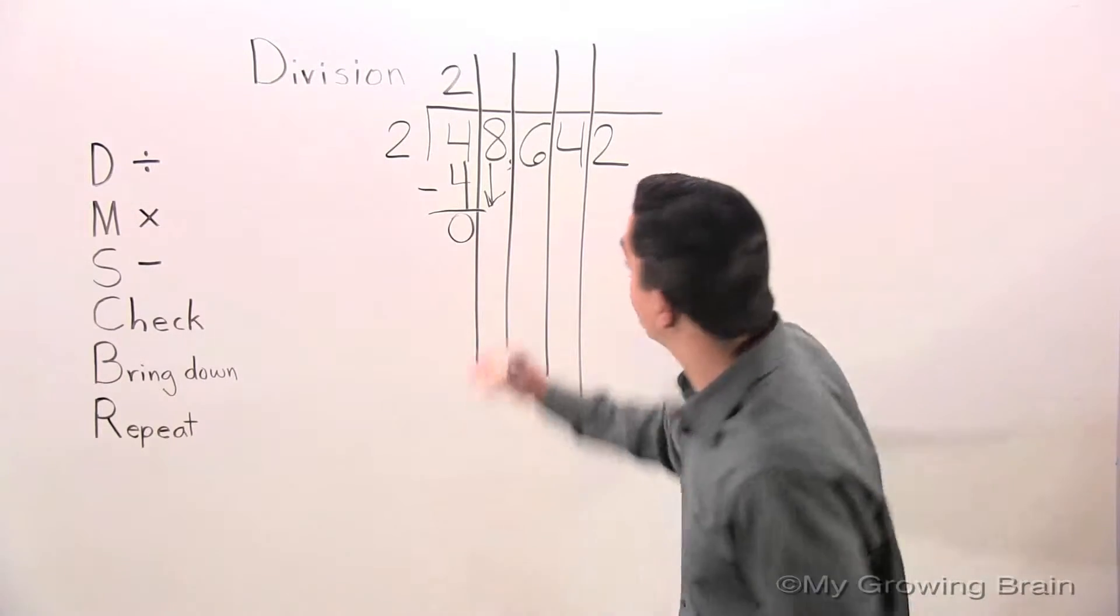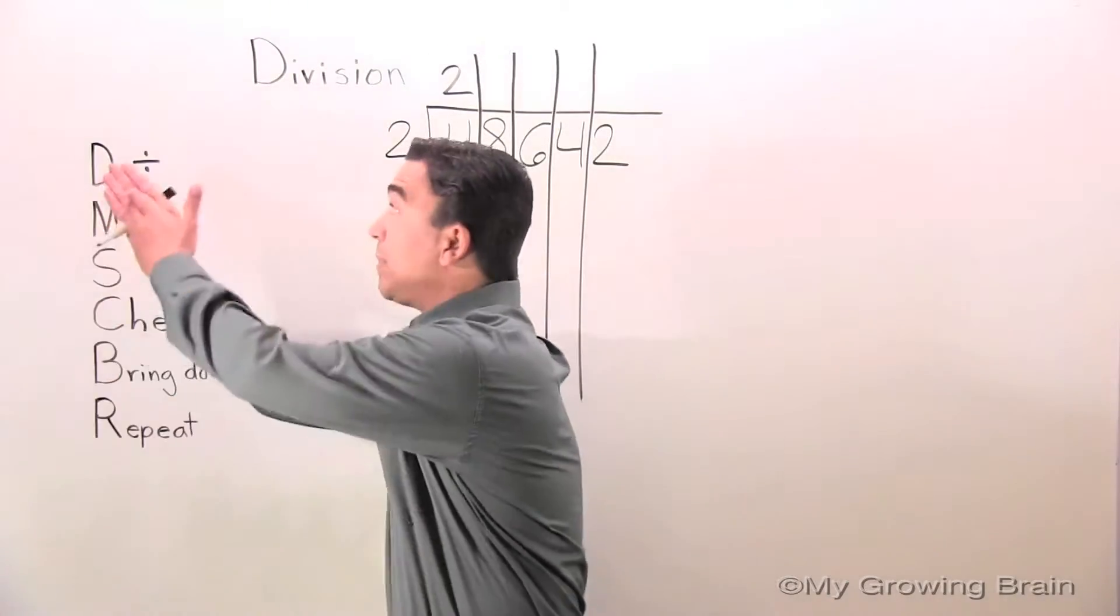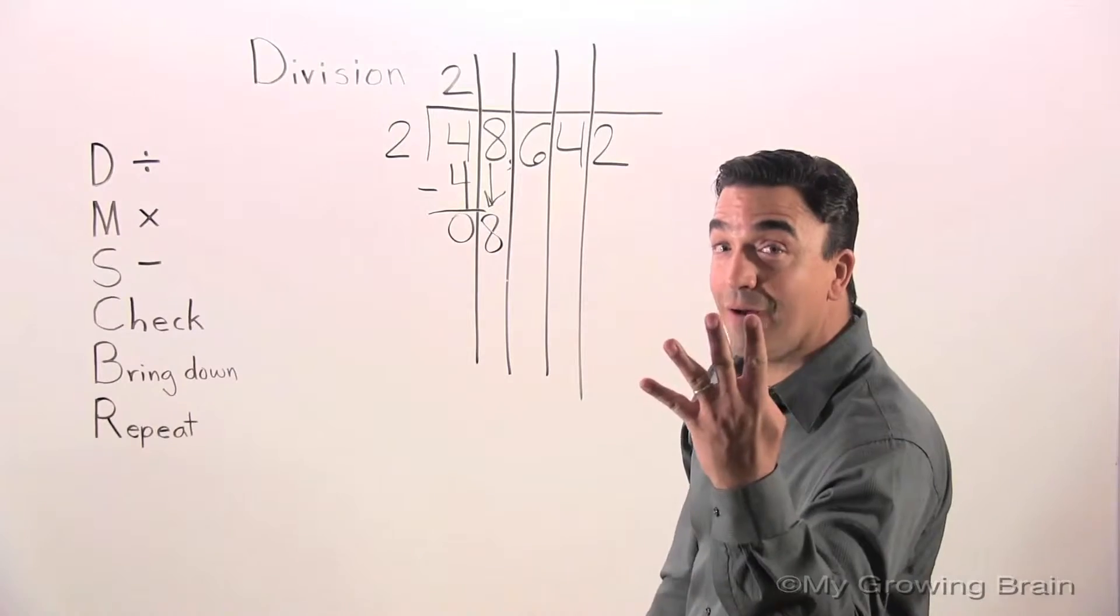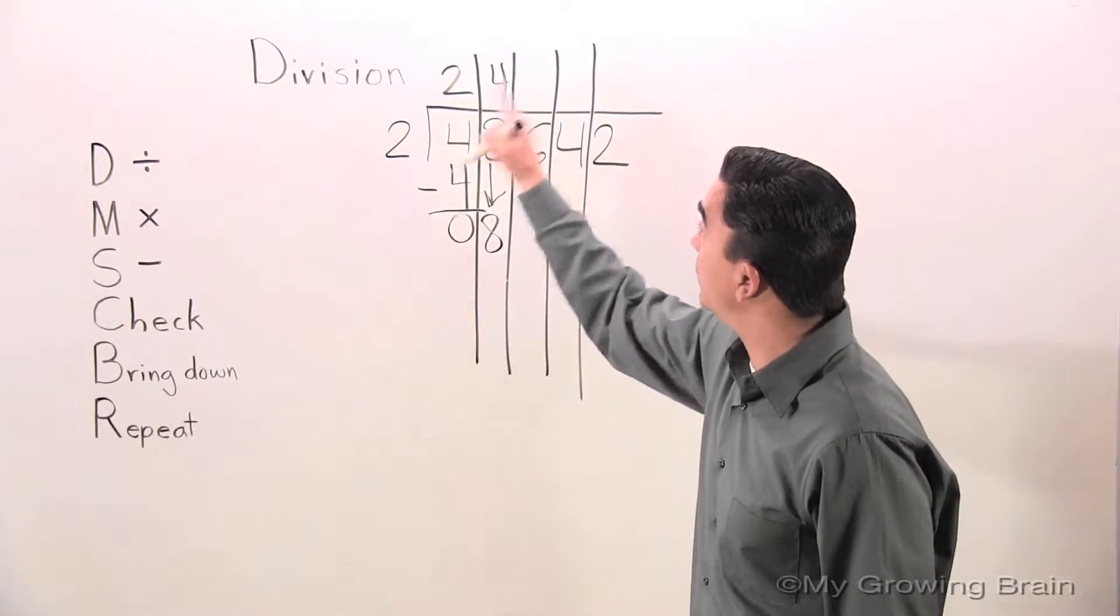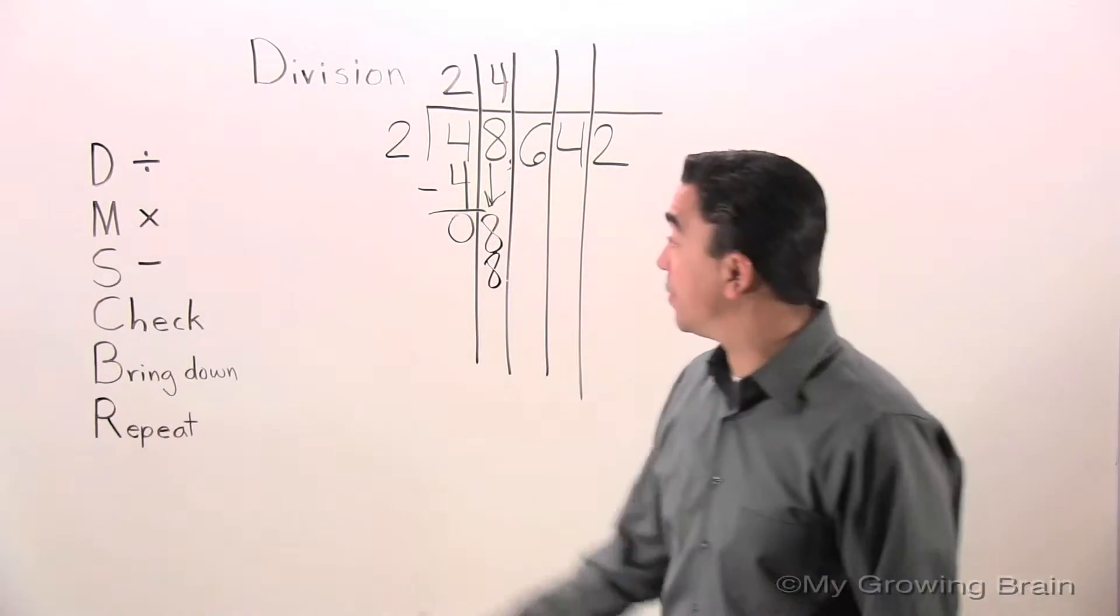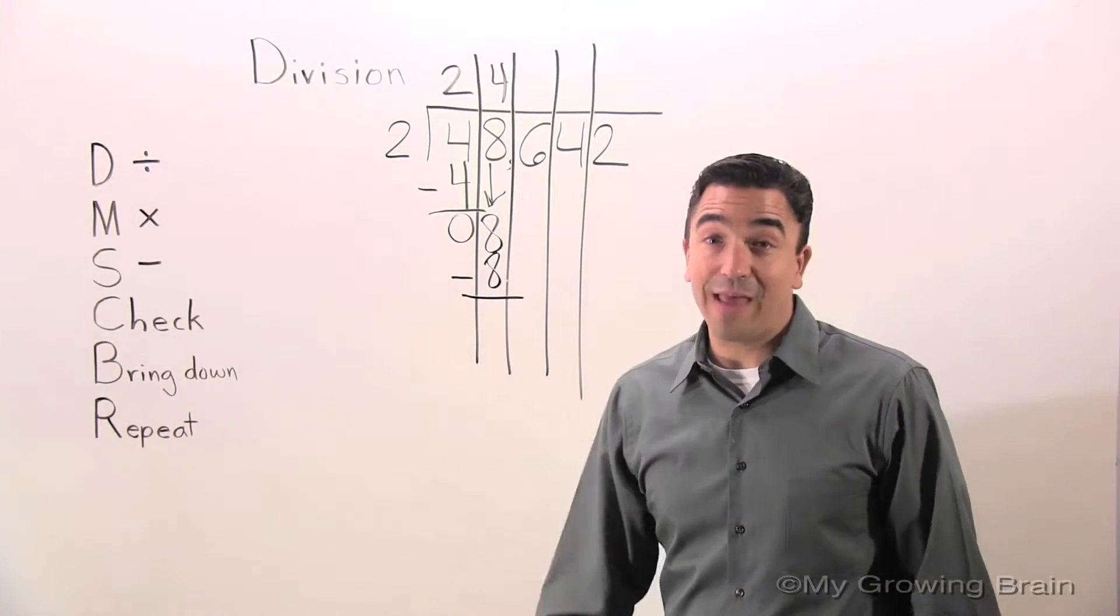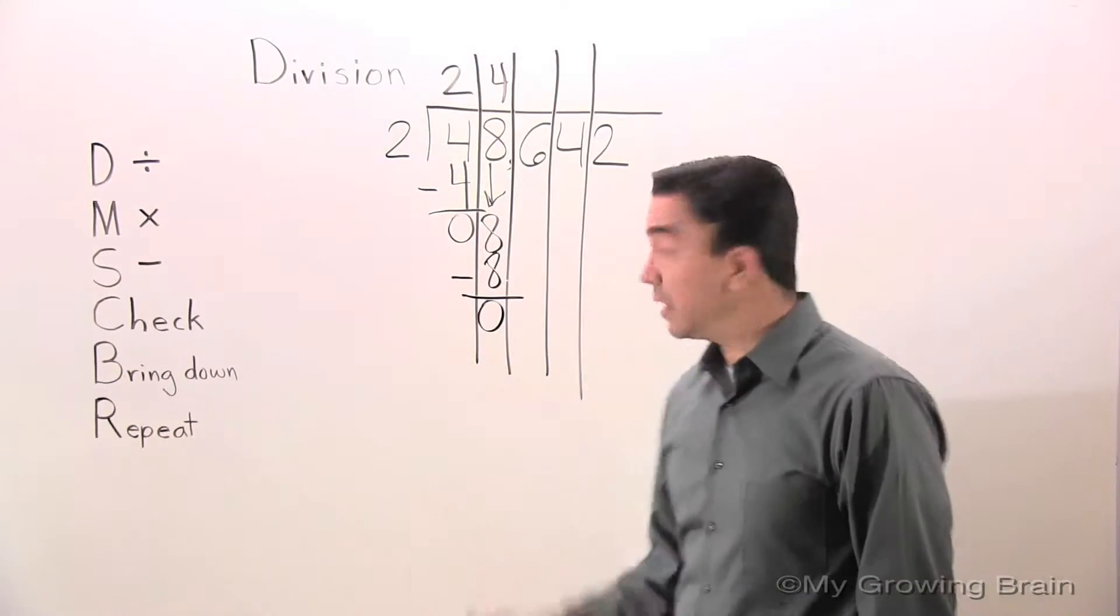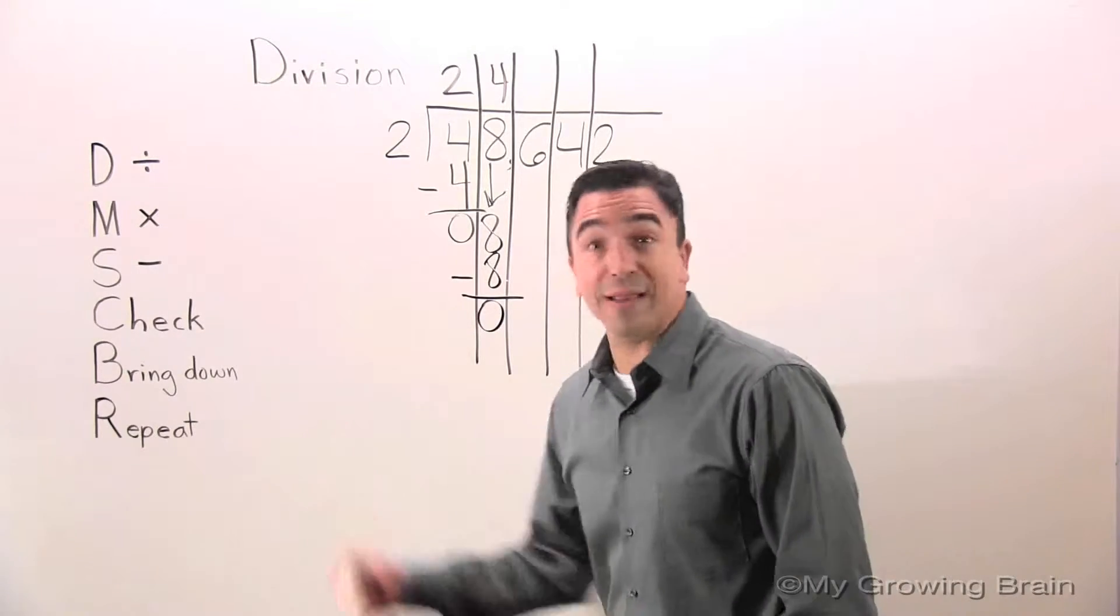Next step: repeat the process. All the way back up, divide. 8 divided by 2 equals 4. Next step: multiply. 2 times 4 equals 8. Next step: subtract. 8 minus 8 equals 0. Check. 0 is less than 2. Keep on going. Bring down.